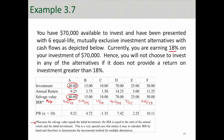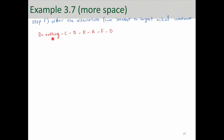The first step is to order these alternatives from smallest to largest initial investment, also considering 'do nothing' as an option with an initial investment of zero. So the order is: Do Nothing, then C, then B, then E, then A, then F, and finally D.